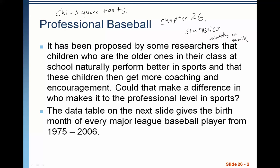Our first example has to do with professional baseball players. This is a real study that's been run. They've also run this very same study with NHL players. If you're curious and want to learn more about it, I highly suggest reading the book Outliers by Malcolm Gladwell. It is a fantastic book that goes into more detail about this and more studies. It has been proposed by some researchers that children who are the older ones in their class at school naturally perform better in sports, and that these children then get more coaching and encouragement. Could that make a difference in who makes it to professional level in sports? The data table on the following page shows the birth month of every major league baseball player from 1975 to 2006.